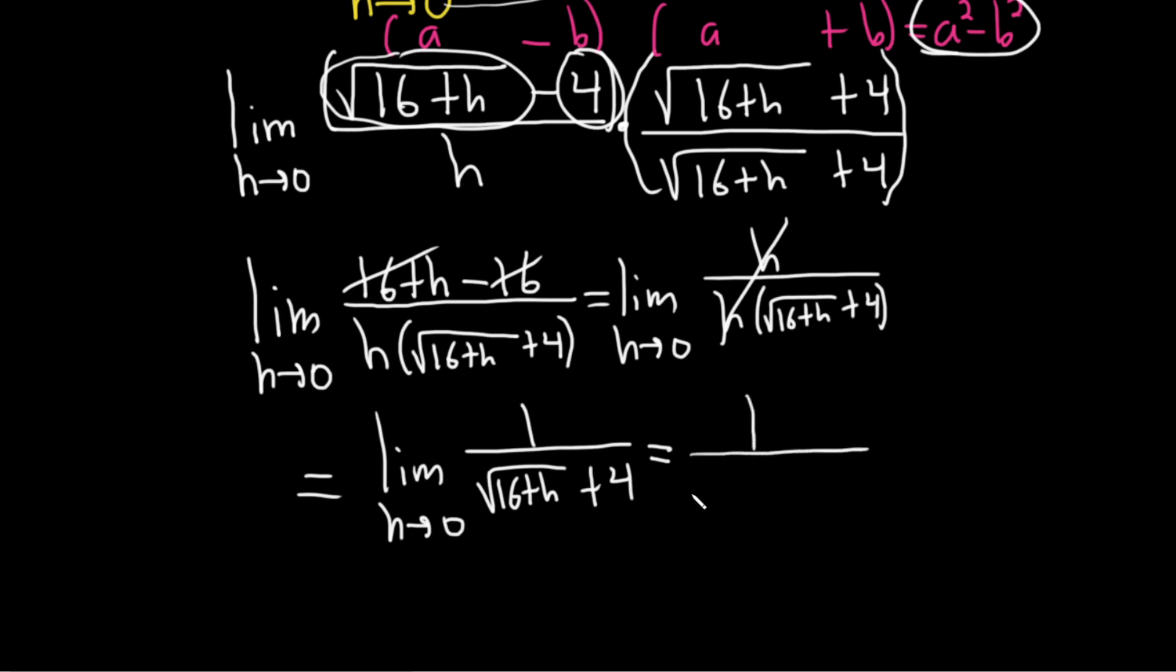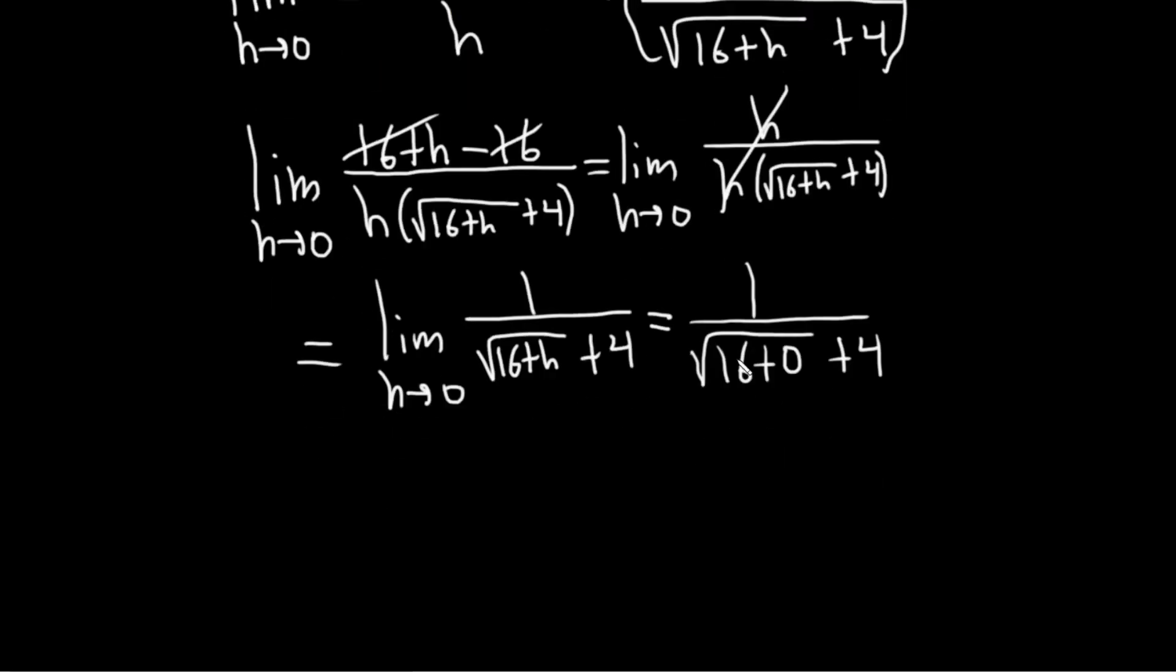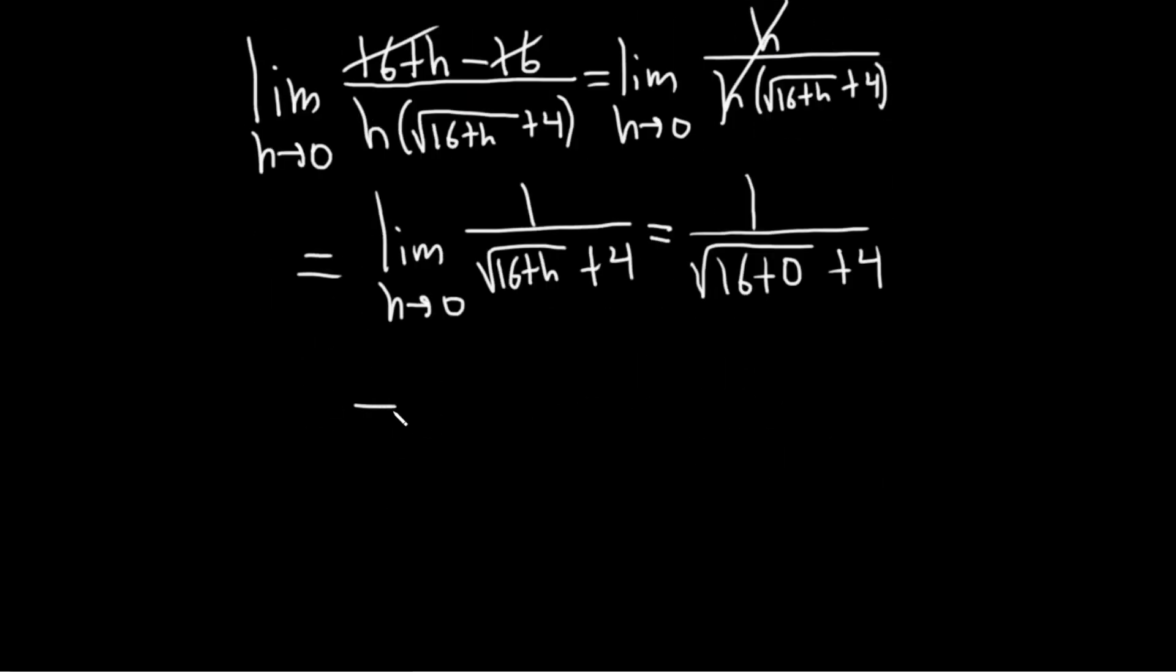1 over the square root of 16 plus 0. And then we have plus 4. Plus 4. So this is equal to, well, this is 1 over the square root of 16 plus 4. This is equal to 1 over 4 plus 4. This is equal to 1 over 8. And that would be the final answer.